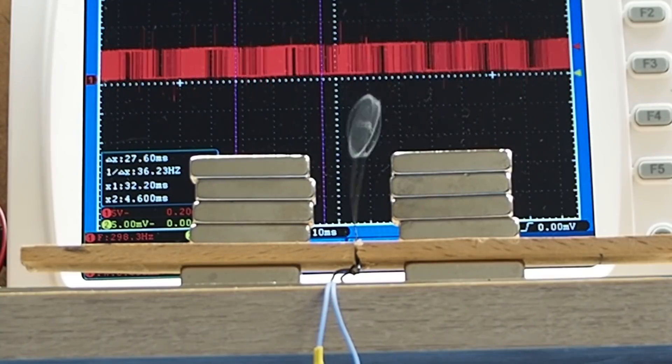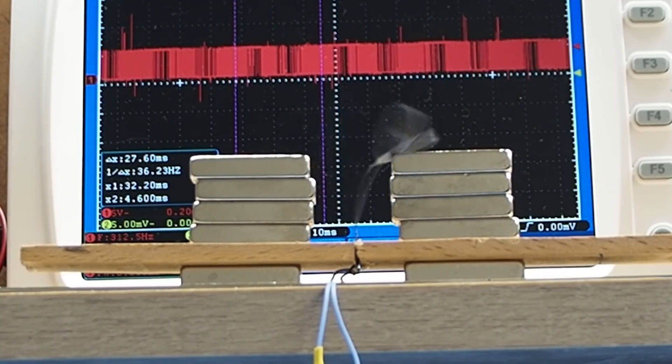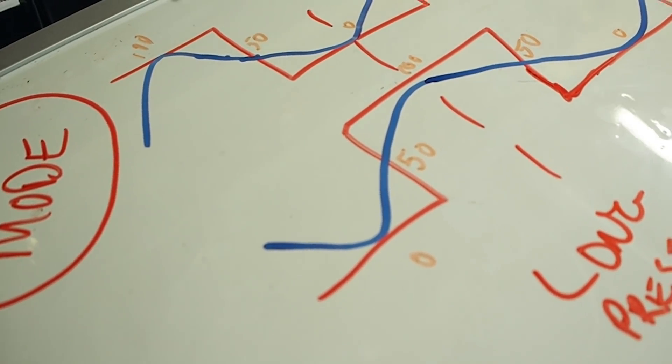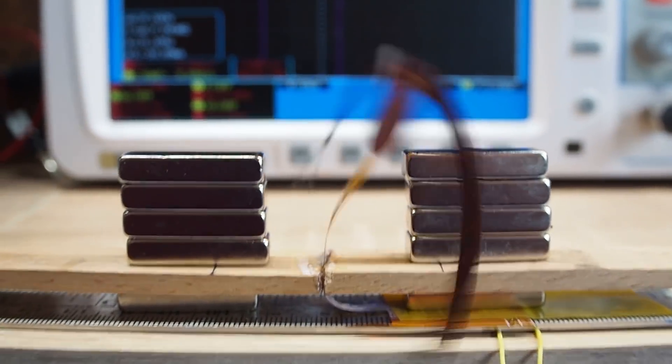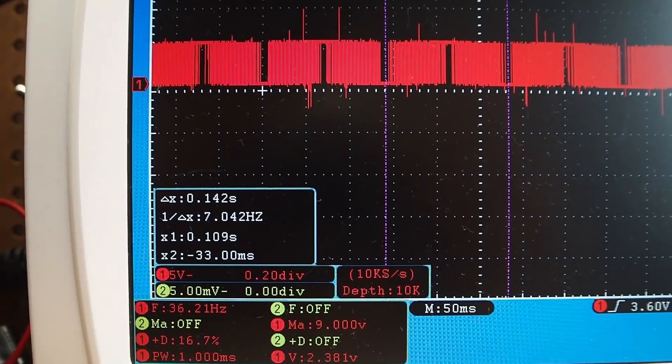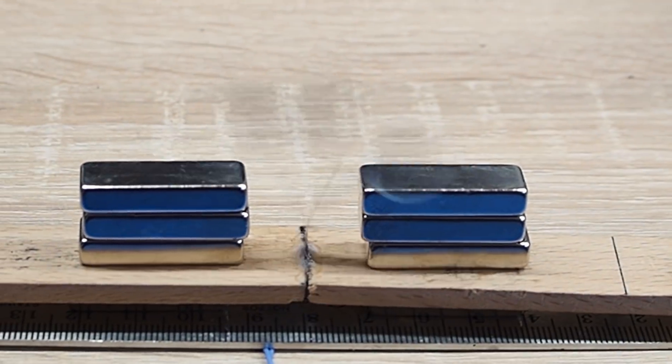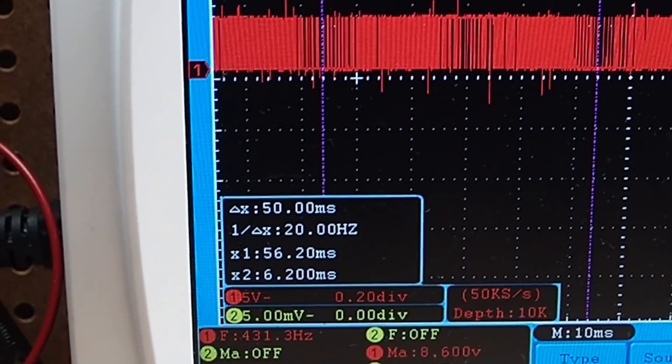The first thing I tried was changing the driving method. Instead of powering the coil with a square wave, I tried varying the duty cycle to create like a triangular wave, but I couldn't see any improvements from this driving technique. In some cases it was even going to lower speed, so I decided to stick with the square wave.